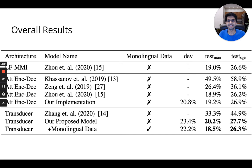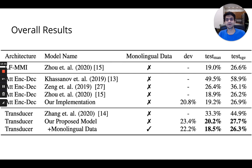Here we summarize the results of our proposed model with respect to previously published models built for the CSME code-switched corpora. We significantly improve over the previously published transducer model without using any monolingual training data. Our model also performs considerably better than most attention-based encoder-decoder models on this dataset and comes close to the best one. Monolingual data with the proposed multi-label encoder framework improves the model further, giving a mixed error rate of 18.5 and 26.3 on the two test sets of the CSME corpora.